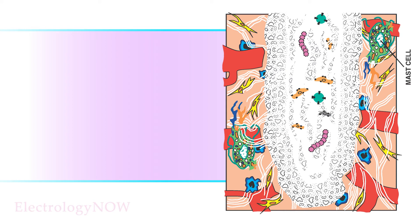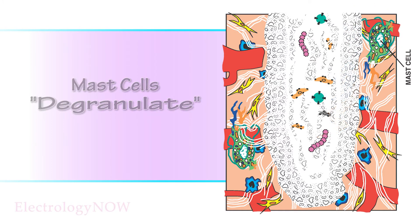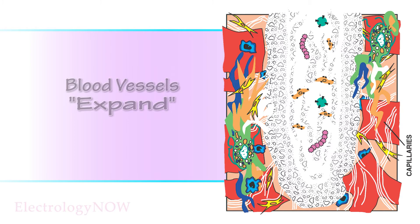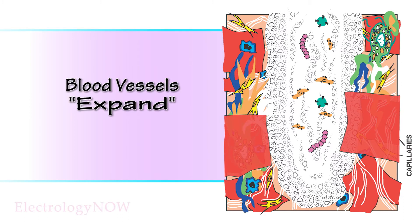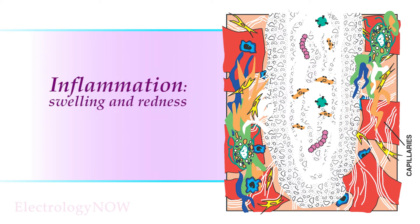Instantly, the mast cells degranulate and flood the wound with chemical mediators. The chemical mediators fire up the cells and the blood vessels expand to carry more blood. The skin gets red and swollen, and this is called inflammation. This is a normal and desirable effect of healing — if your skin didn't become inflamed, it would not heal.